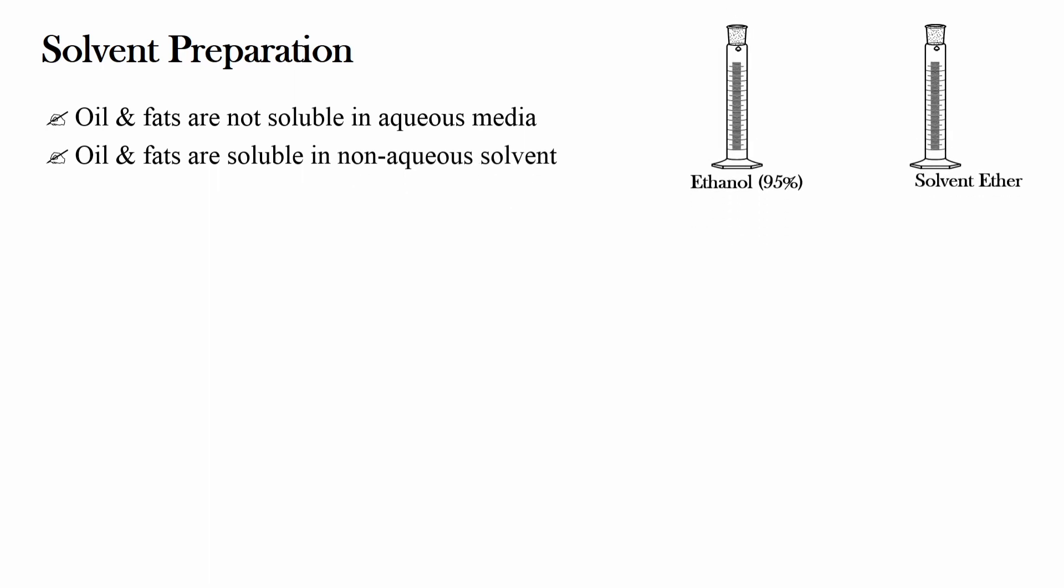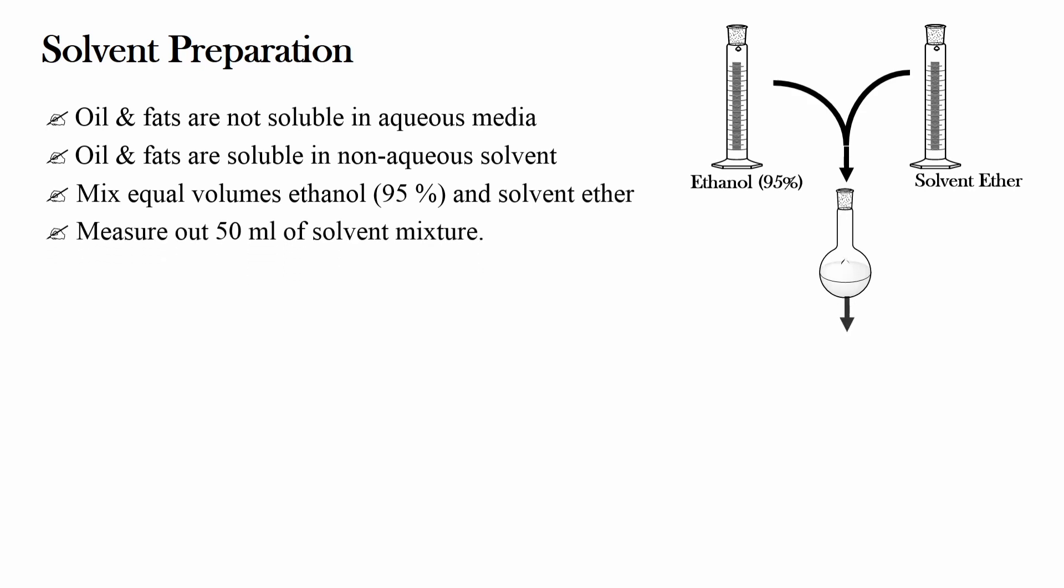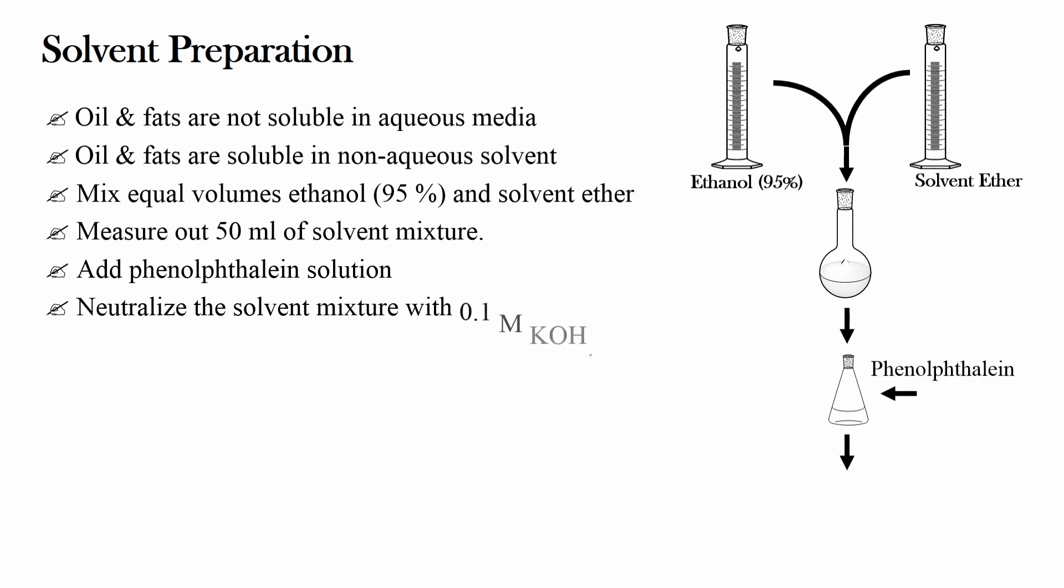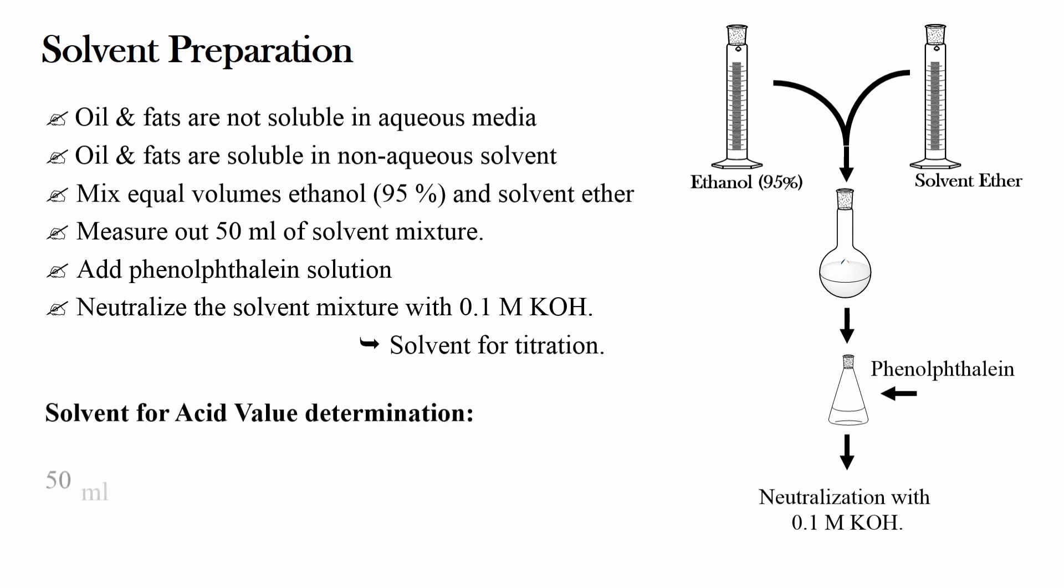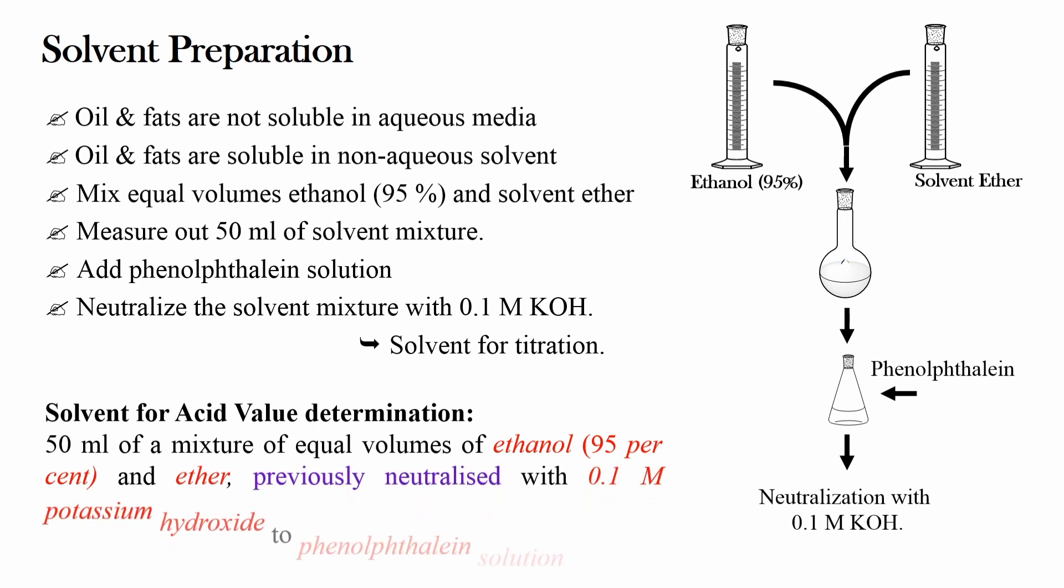So for acid value determination it is required to prepare non-aqueous solvent. Here mix equal volume of ethanol and solvent ether. Measure out 50 ml of this solvent mixture. Add 1 ml of phenolphthalein solution and neutralize the solvent with 0.1 molar potassium hydroxide. This is the solvent for titration. In short, the solvent for acid value determination includes 50 ml of a mixture of equal volume of ethanol 95% and ether previously neutralized with 0.1 molar potassium hydroxide to phenolphthalein solution.